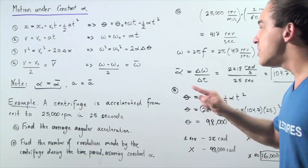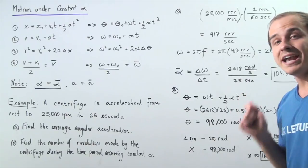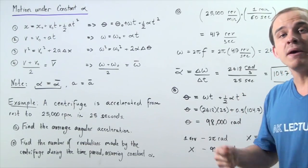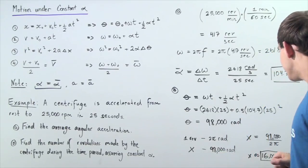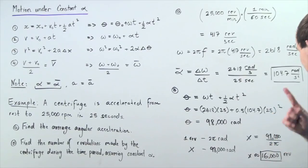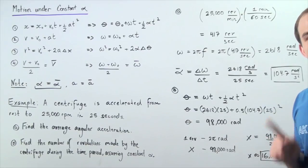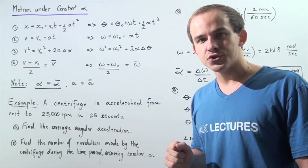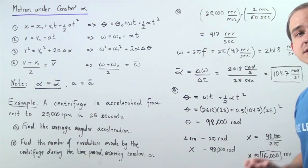Recalling that in one full revolution there are 2π radians, to find how many revolutions are in 98,000 radians we simply divide 98,000 by 2π. We get approximately 16,000 revolutions, meaning the centrifuge rotates 16,000 times during the 25-second interval.